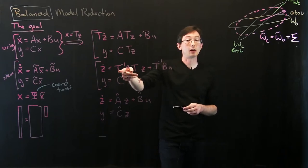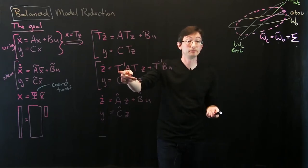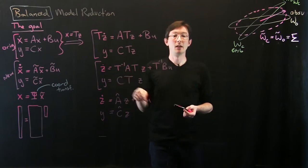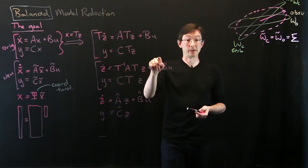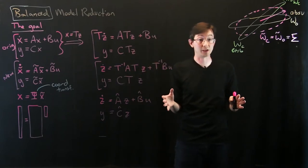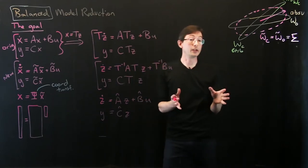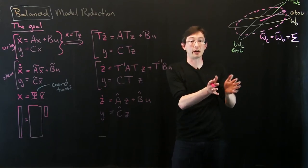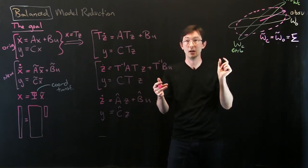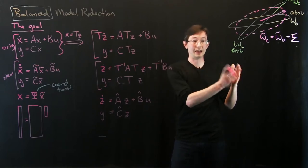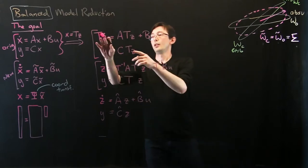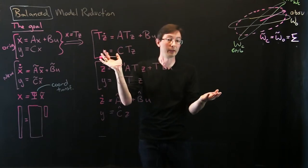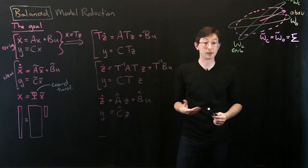If the columns of T are orthonormal, then T-inverse would be T-transpose. So if I had a very special transformation T where it was not only invertible but the columns are orthonormal — meaning the inner product of any two distinct columns is zero — then this inverse is even easier: it would just be T-transpose.